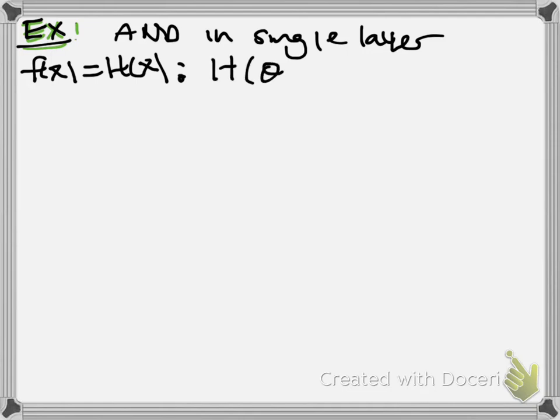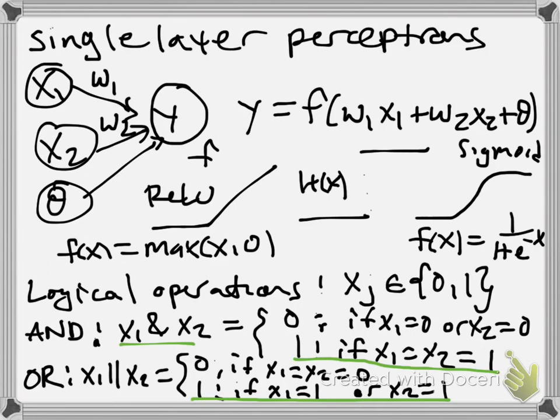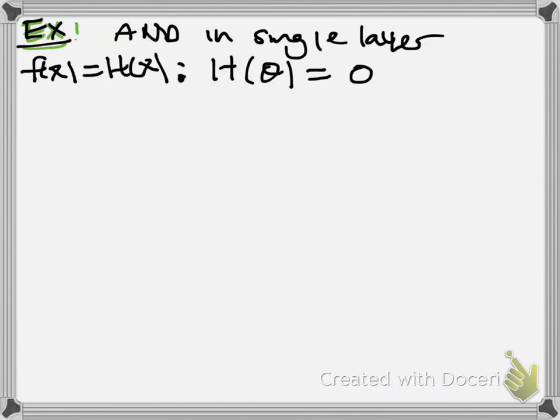So, h of theta should be equal to 0 in this case. So, if we look back at our formula from before, this is really just taking our formula for our perceptron, plugging in x1 equals 0, x2 equals 0, and we just get the non-linearity acting on theta. In the case of an AND operation, this should give us 0.